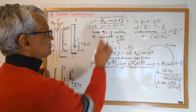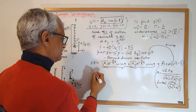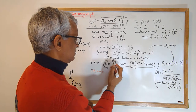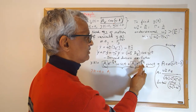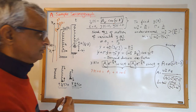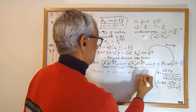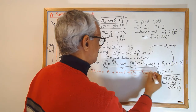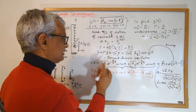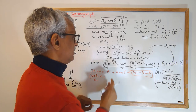The constants A₁ and A₂ are fixed by initial conditions — position and velocity. Applying y(0) = 0: setting t = 0 gives A₁ + A·cos(δ) = 0, so A₁ = −A·cos(δ). To find A₂, I take the time derivative ẏ(t) and then set t = 0 equal to zero.